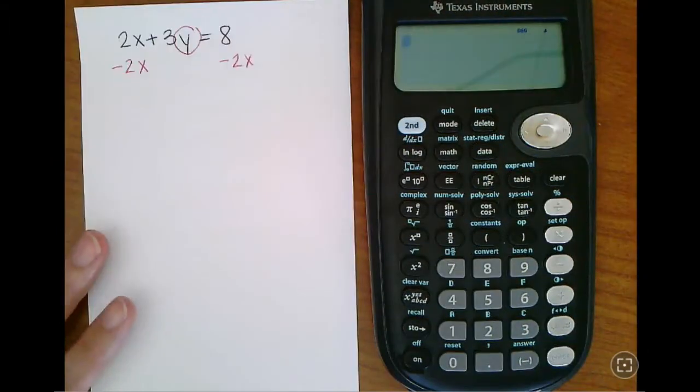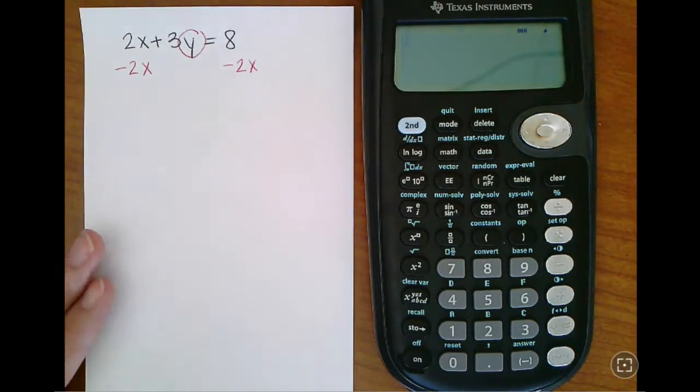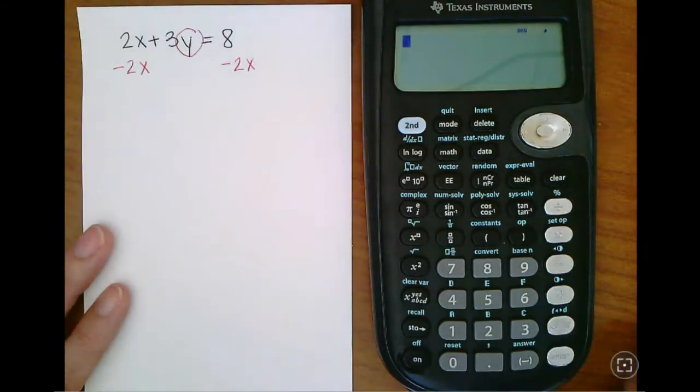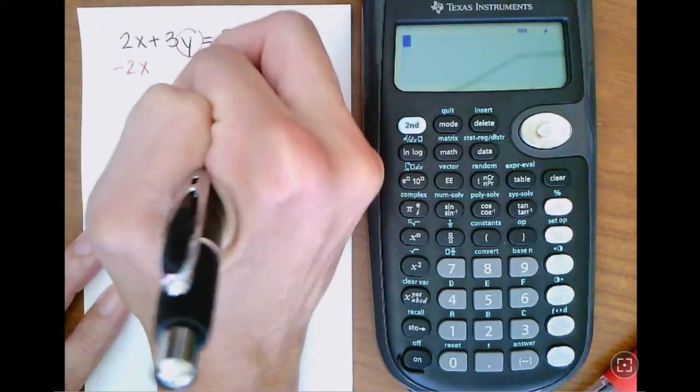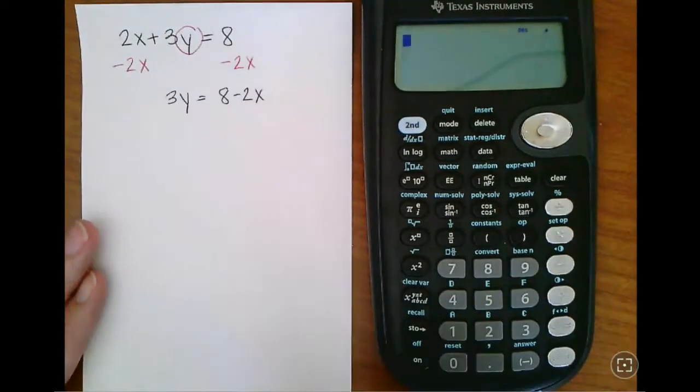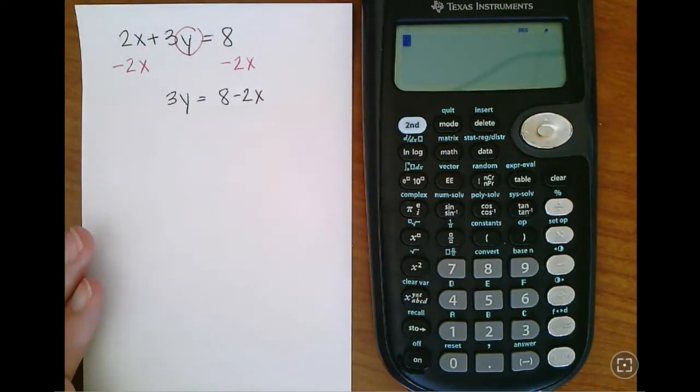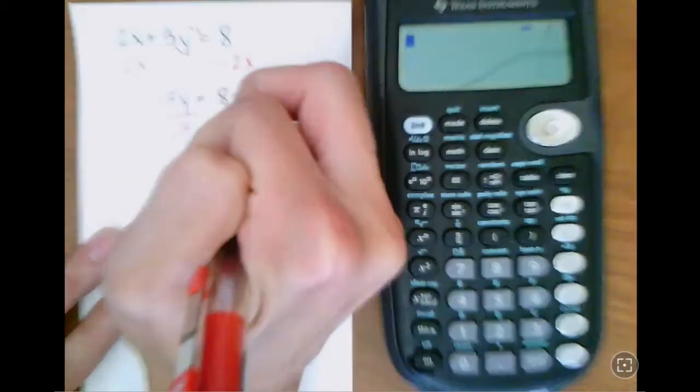So first thing that I would do is isolate that variable term by subtracting the 2x, moving the opposite of my order of operations to undo stuff. So now we have 3y equals 8 minus 2x. You can put that in the other order if you want it to look more like slope intercept, negative 2x plus 8, but I'm going with this. And then we'll divide out that coefficient of 3.